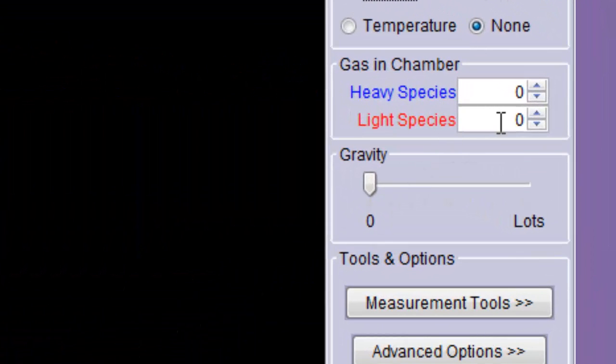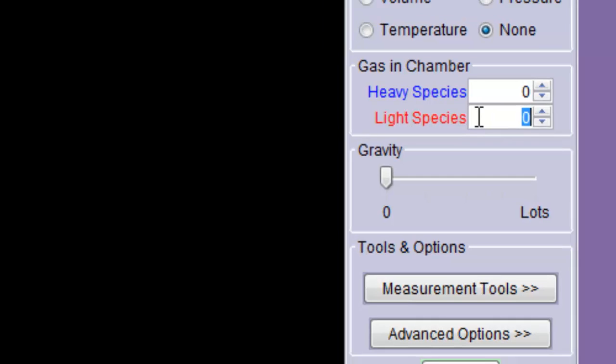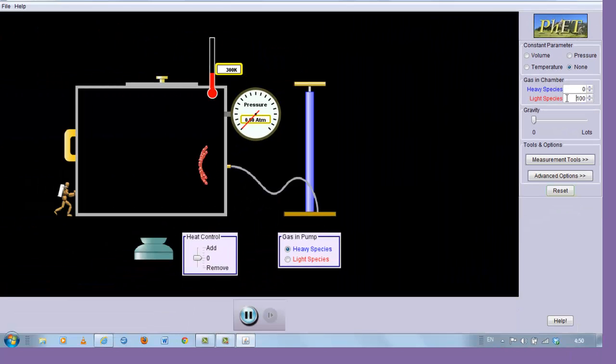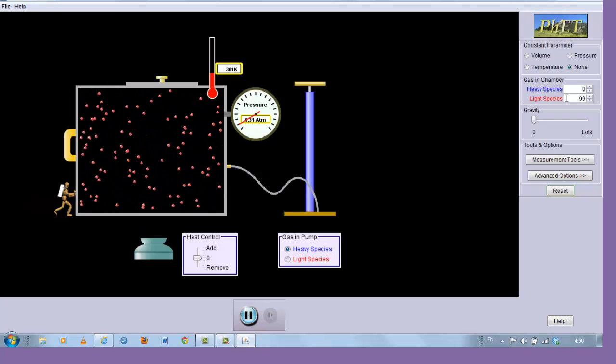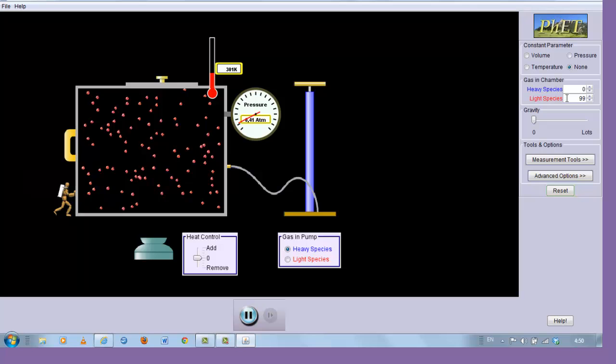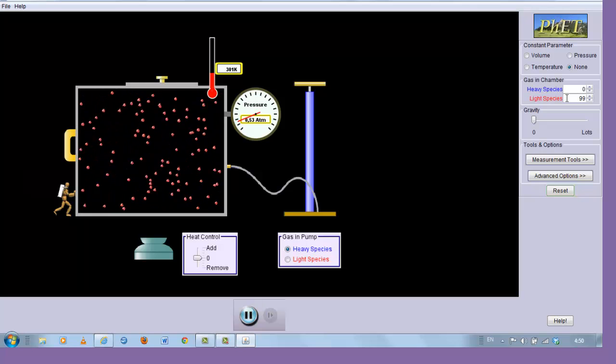Let's enter in 100 light molecules. On the right where it says light species, I'm going to put in 100 and insert 100 molecules or atoms of gas. This could be gas like hydrogen, which is the lightest gas that there is.